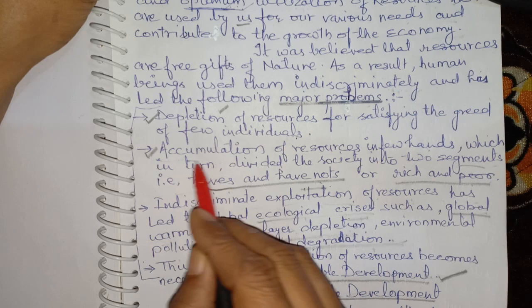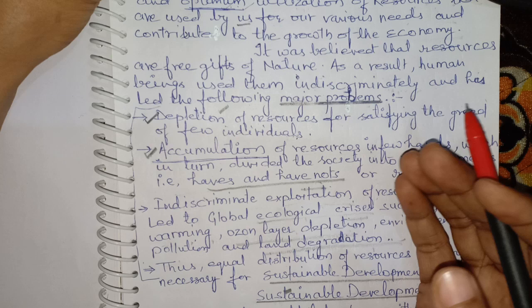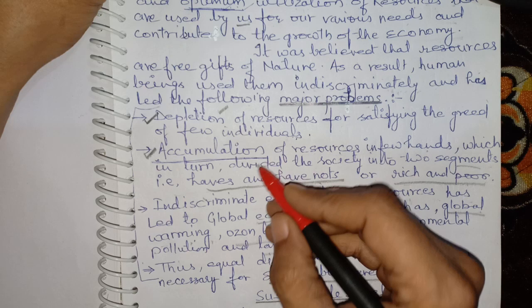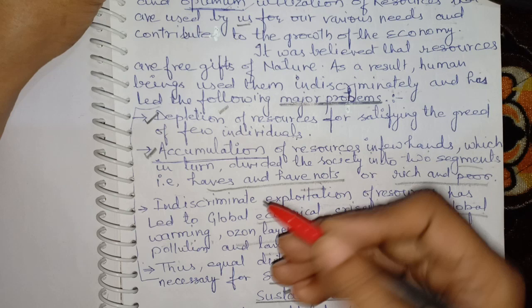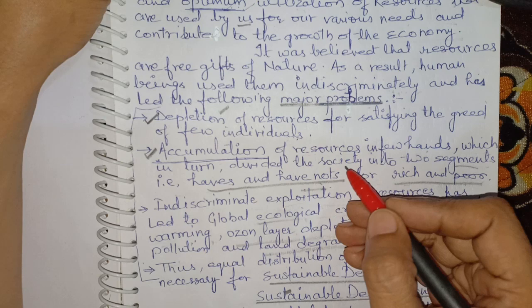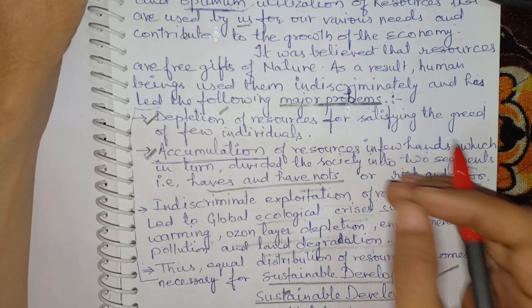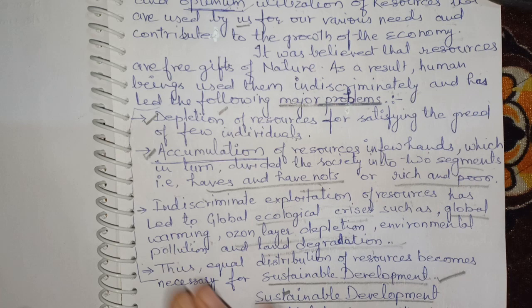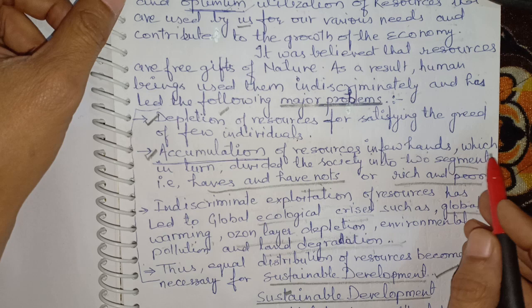The second problem is accumulation of resources in few hands. This means hoarding resources. As we recently saw during the COVID-19 pandemic — people rushed to markets and bought large amounts of supplies. Someone who needed 5 kg bought 50 or 100 kg and stored it at home. As a result, supplies ran out, prices of remaining goods shot up, and poor people faced great hardship because they couldn't afford to buy them. This is accumulation of resources in few hands, which divides society into two segments — haves and have-nots, or rich and poor.